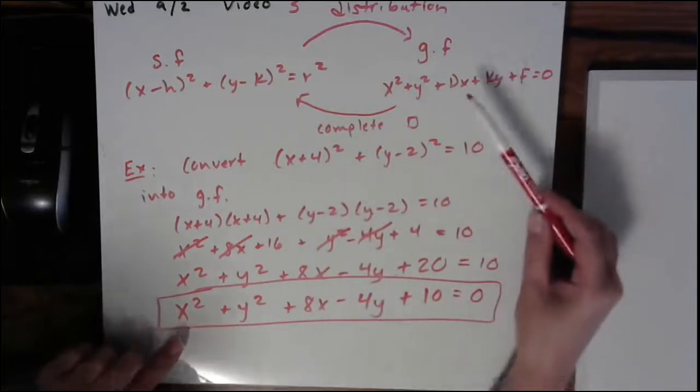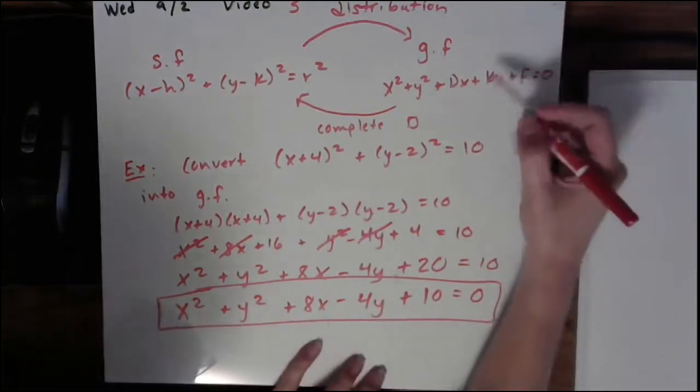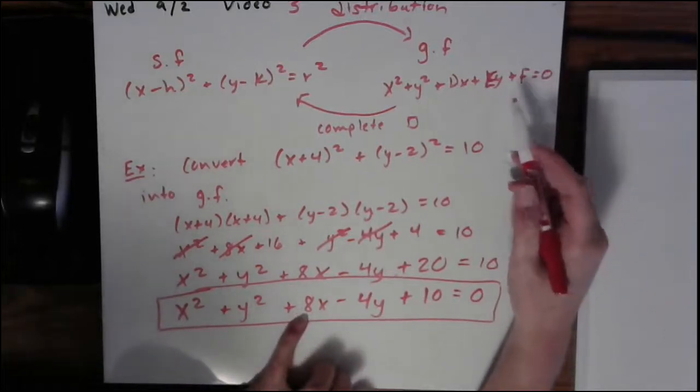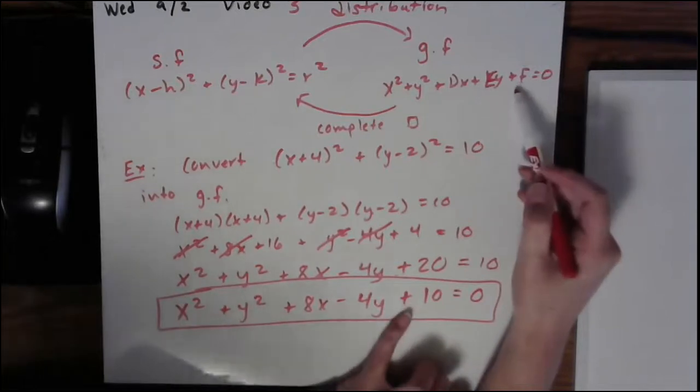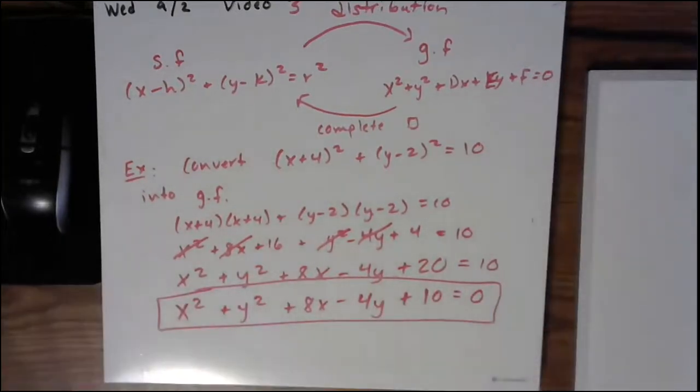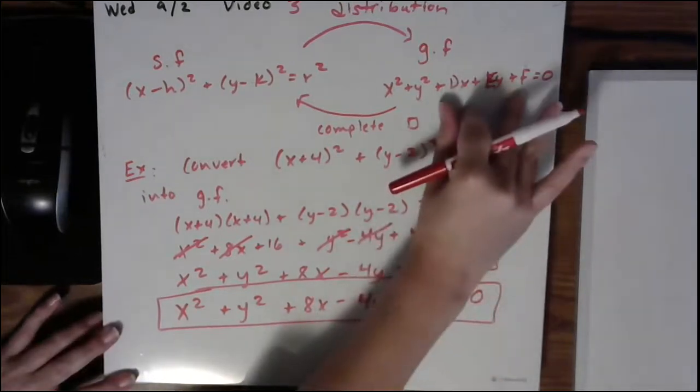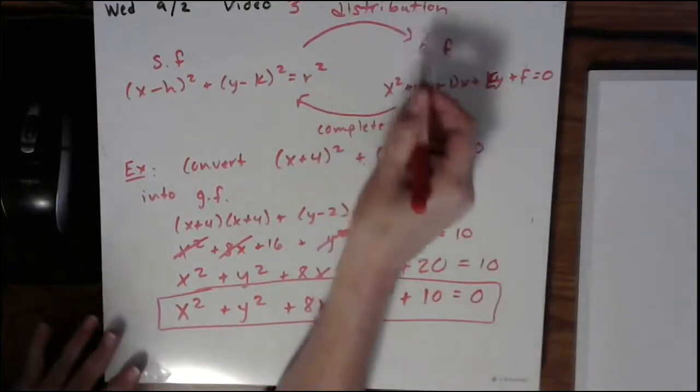Also notice now what these d's, e's, and f's are. There's d positive 8, e is negative 4, and f is 10. So I had mentioned previously that they just happen to be numbers. So in this example, those are the three numbers that would correspond to those three capital letters. So that's an example of going forward.